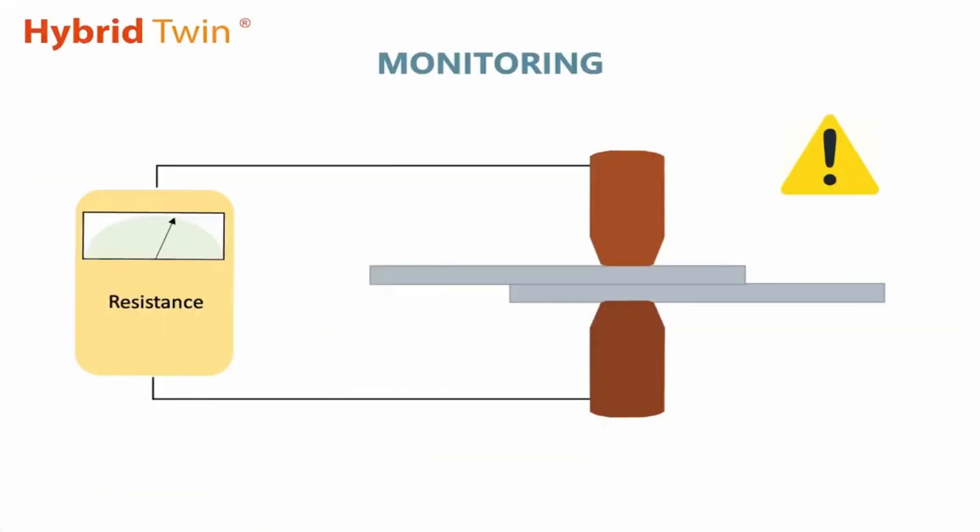Let's come back to our welding example. During production to detect the electrode wear, electrical resistance is continuously monitored.